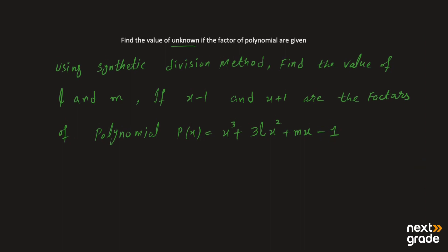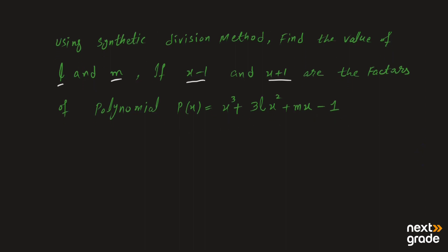तो हम से यह demand की गई है कि L और M की value find करें, अगर x minus 1 और x plus 1 यह factors हैं इस polynomial के. तो हम क्या करेंगे — यह जो factors given हैं, इनको 0 के equal पहले put करेंगे. Put x minus 1 equal to 0 gives x = 1, और x plus 1 equal to 0 gives x = minus 1.